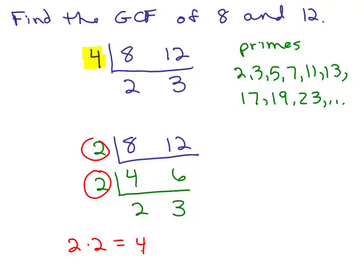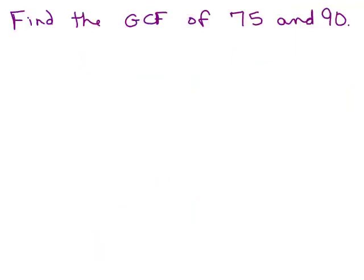Now this is a fairly easy problem, but it works for more than two numbers and it works for large numbers. So let's do a more interesting example. Let's find the greatest common factor of 75 and 90. You're looking for the biggest factor, or divisor — that's another word — of 75 and 90. So we just put 75 and 90 under the upside-down division bar.